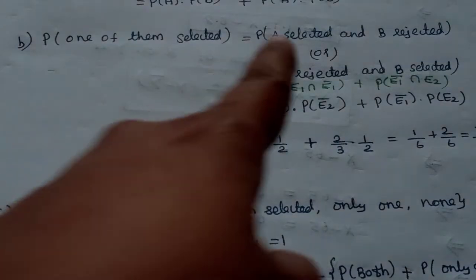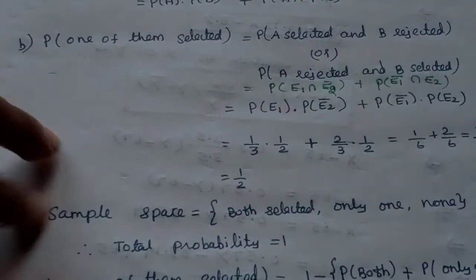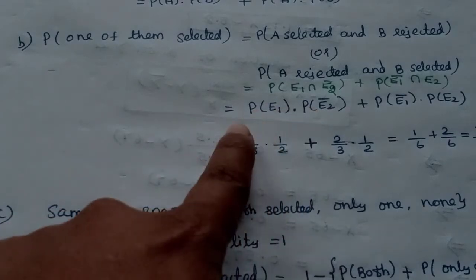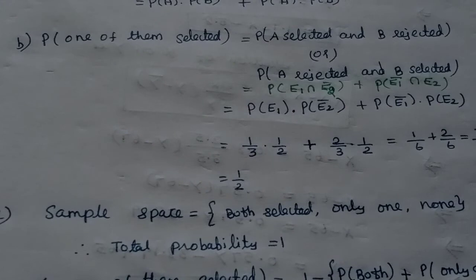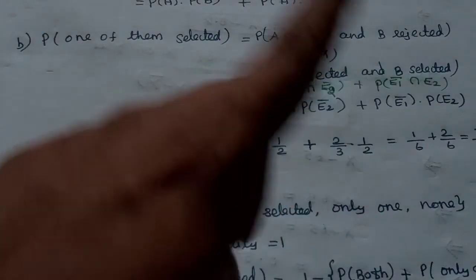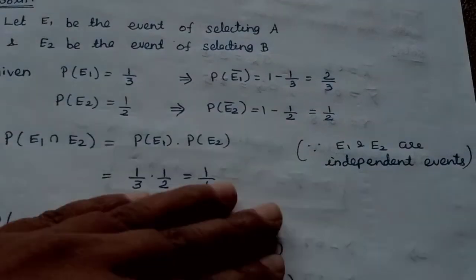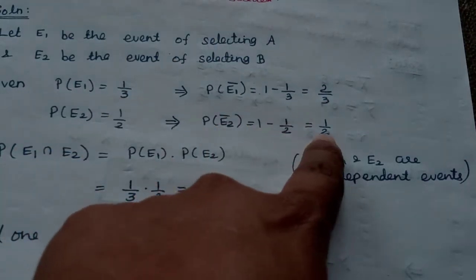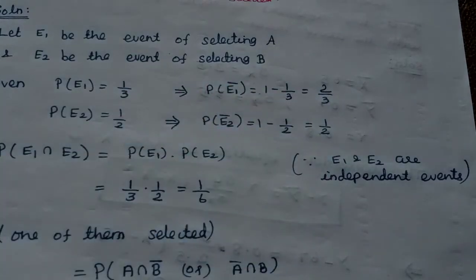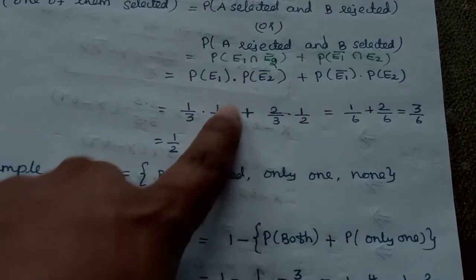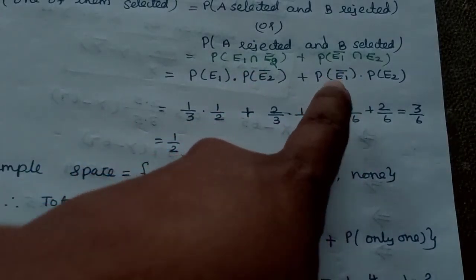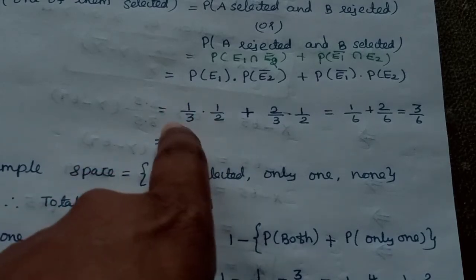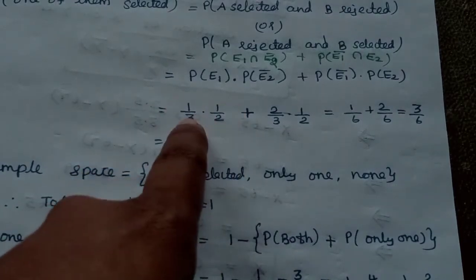Since E1 and E2 are independent, we have: probability of E1 intersection E2 bar equals probability of E1 into probability of E2 bar, which is 1 by 3 into 1 by 2. Plus probability of E1 bar into probability of E2, which is 2 by 3 into 1 by 2. Adding these gives the probability that only one of them is selected.